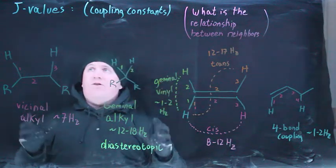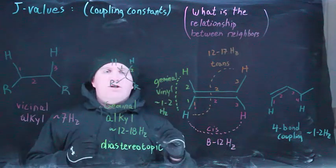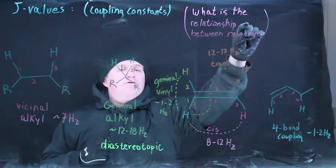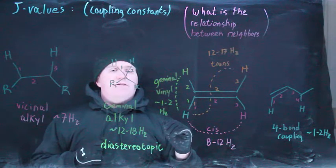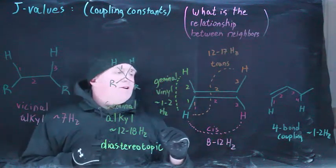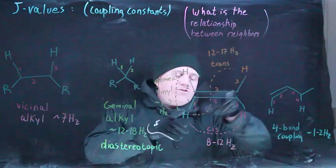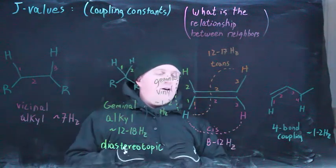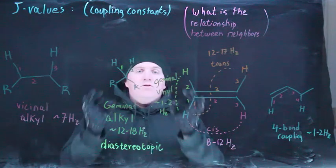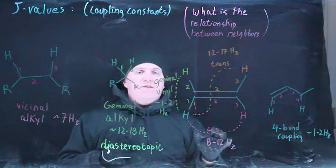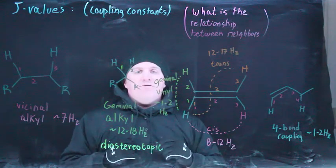If there's one take-home message from the entire J value discussion here, it's simply that it tells you something about the relationship between the neighbors. The standard relationship is going to be 7 hertz. If you see something that deviates from that, it might be a geminal vinyl, they may be trans to each other, they might be on the same carbon and alkyl, so geminal alkyl. You learn some information by looking at the J values, which is why they offer substantial value.